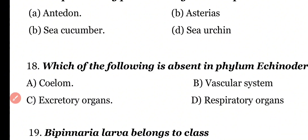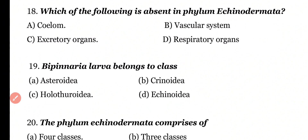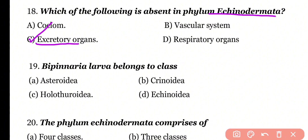Question 18: Which of the following is absent in phylum Echinodermata — Coelom, Vascular System, Excretory System, or Respiratory Organs? Correct answer is Option C. The Excretory System is absent in Echinoderms.